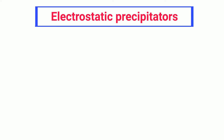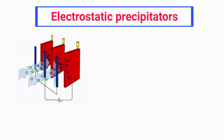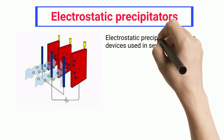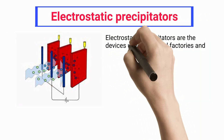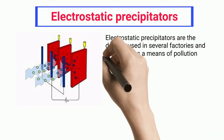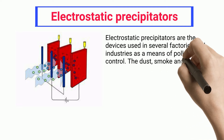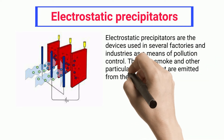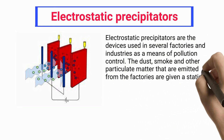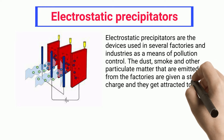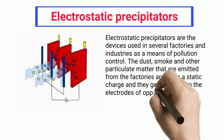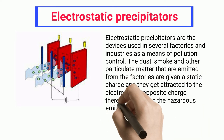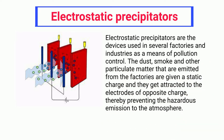Electrostatic precipitators are devices used in several factories and industries as a means of pollution control. The dust, smoke, and other particulate matter emitted from factories are given a static charge, and they get attracted to the electrodes of opposite charge, thereby preventing hazardous emissions to the atmosphere.